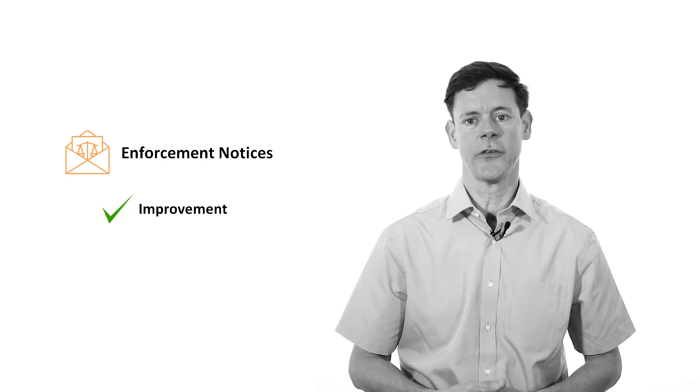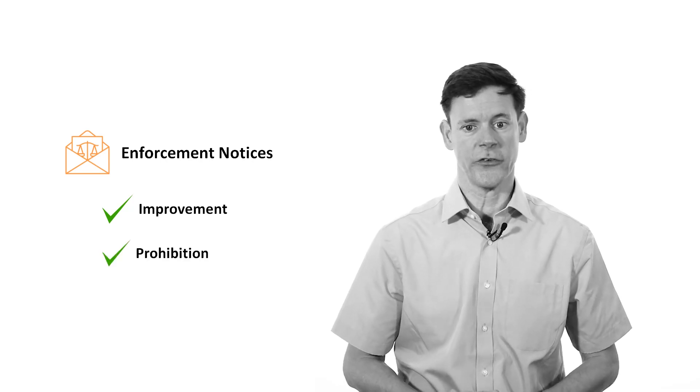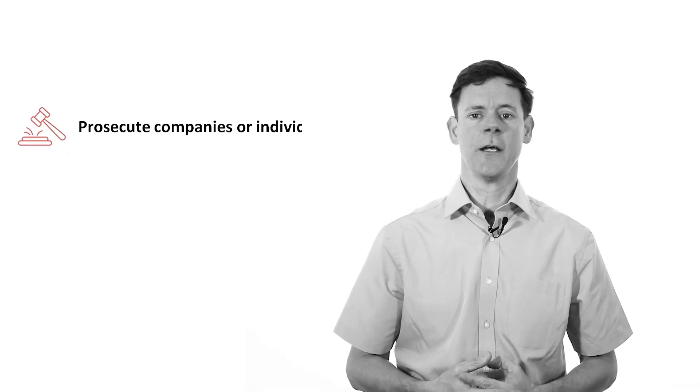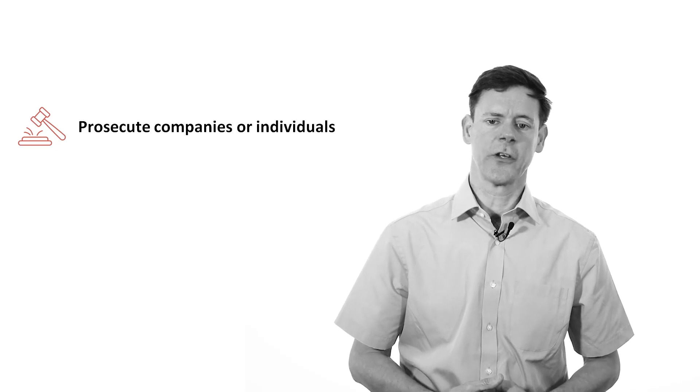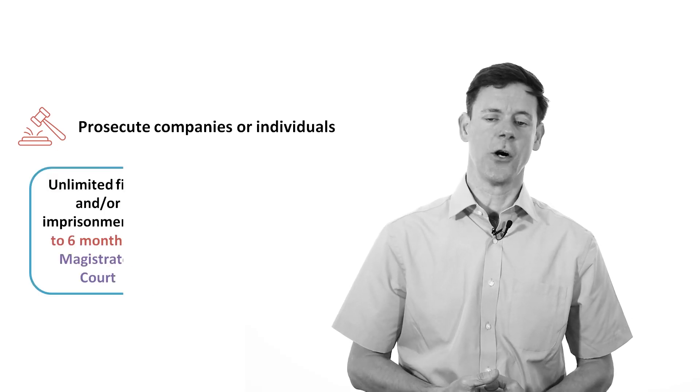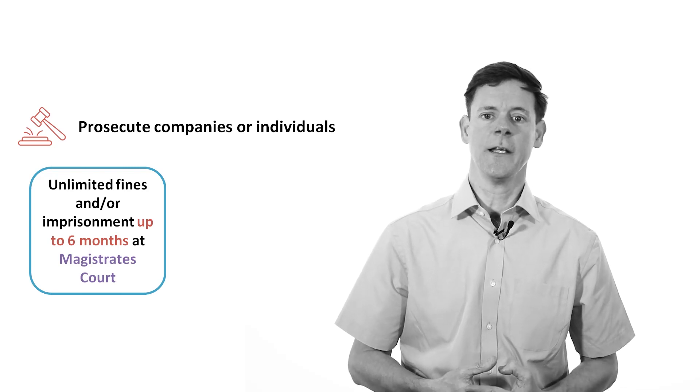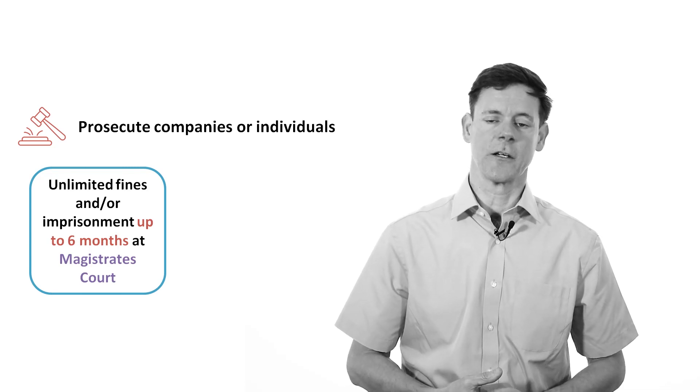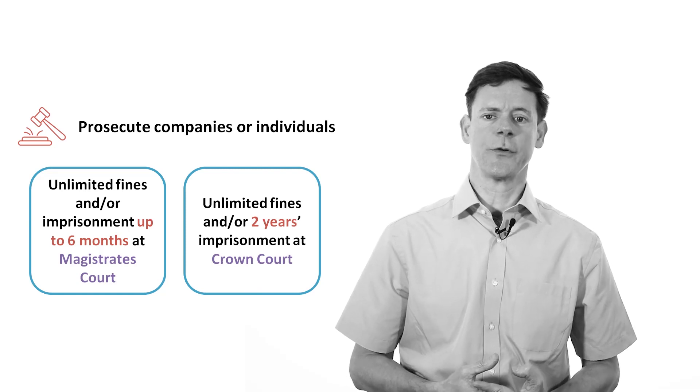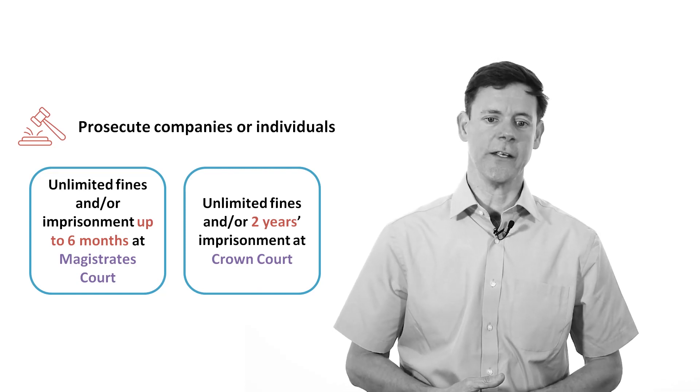HSE inspectors use a range of enforcement powers, such as enforcement notices in the form of improvement notices and prohibition notices. And of course, they can prosecute through the criminal courts. Successful prosecution would normally lead to a fine and or imprisonment in the magistrates court, unlimited fine and imprisonment up to six months, and at Crown Court, an unlimited fine and imprisonment potentially up to two years.